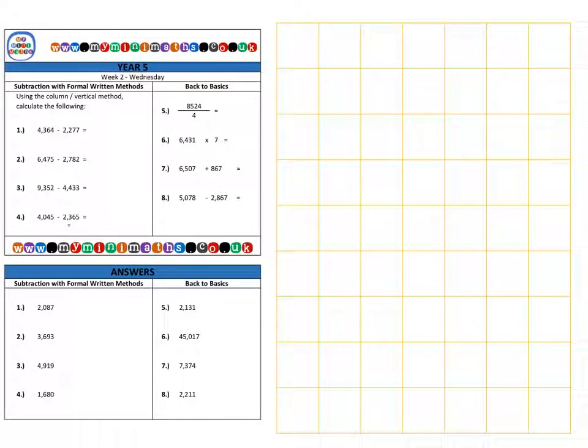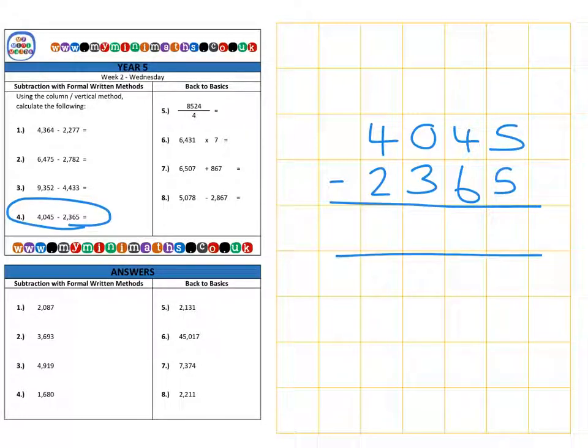Finally, we're on question four, which is 4,045, and we're going to subtract 2,365. As with before, five units subtract five units. Nothing.